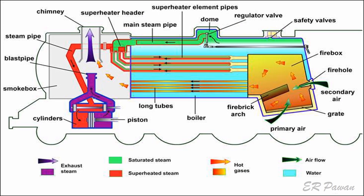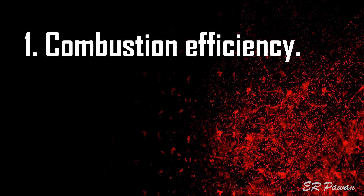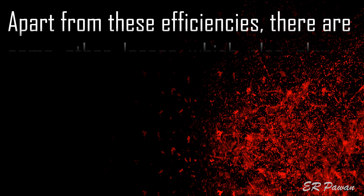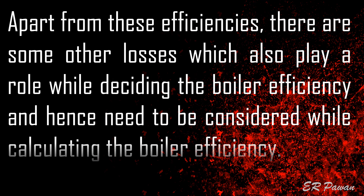Boiler efficiency is a combined result of efficiencies of different components of a boiler. A boiler has many subsystems whose efficiency affects the overall boiler efficiency. The key efficiencies which finally decide the boiler efficiency are combustion efficiency and thermal efficiency. Apart from these, there are other losses which also play a role and need to be considered while calculating boiler efficiency.